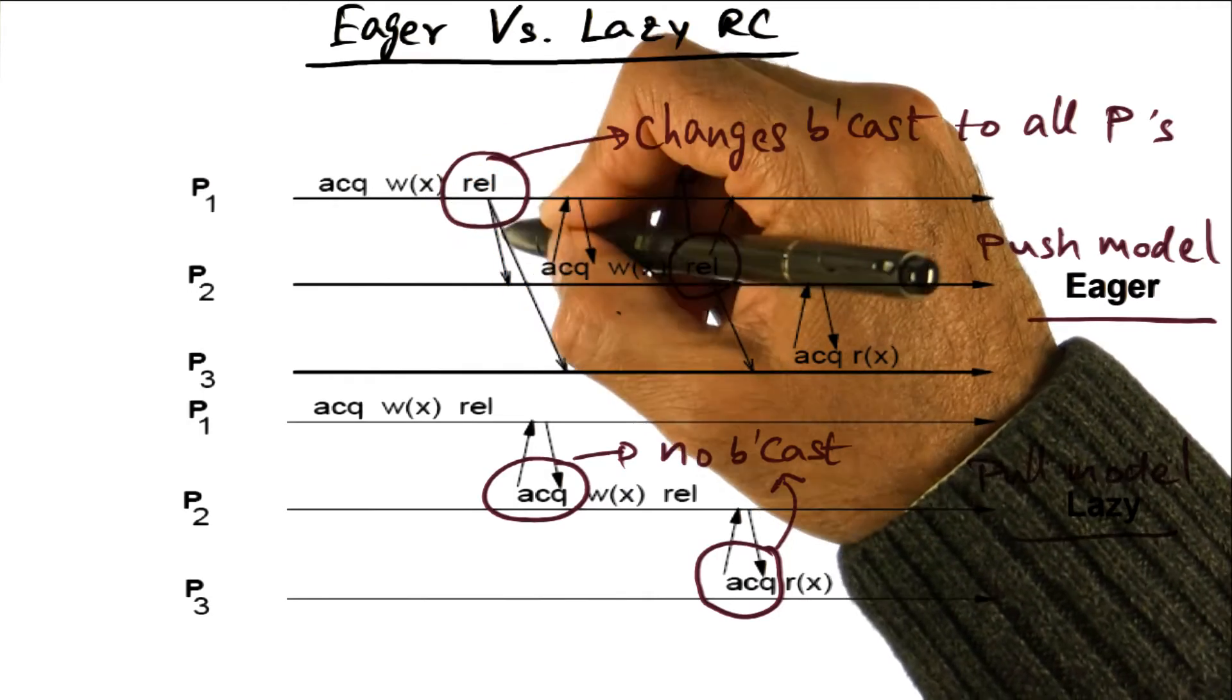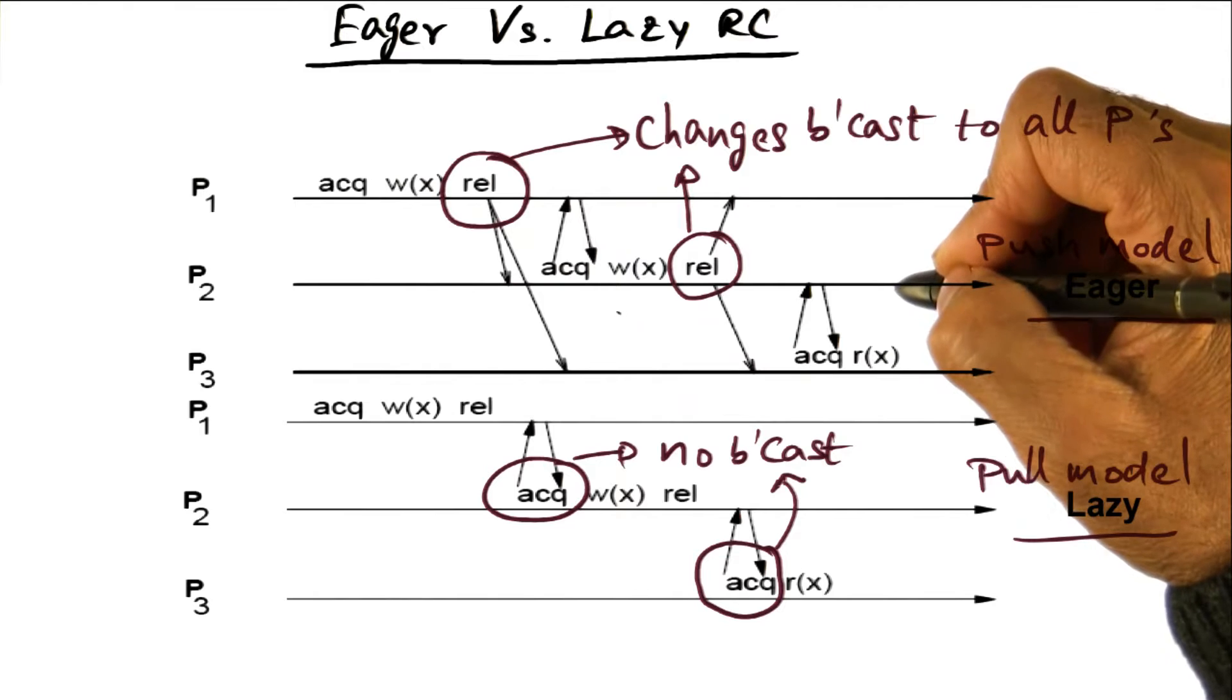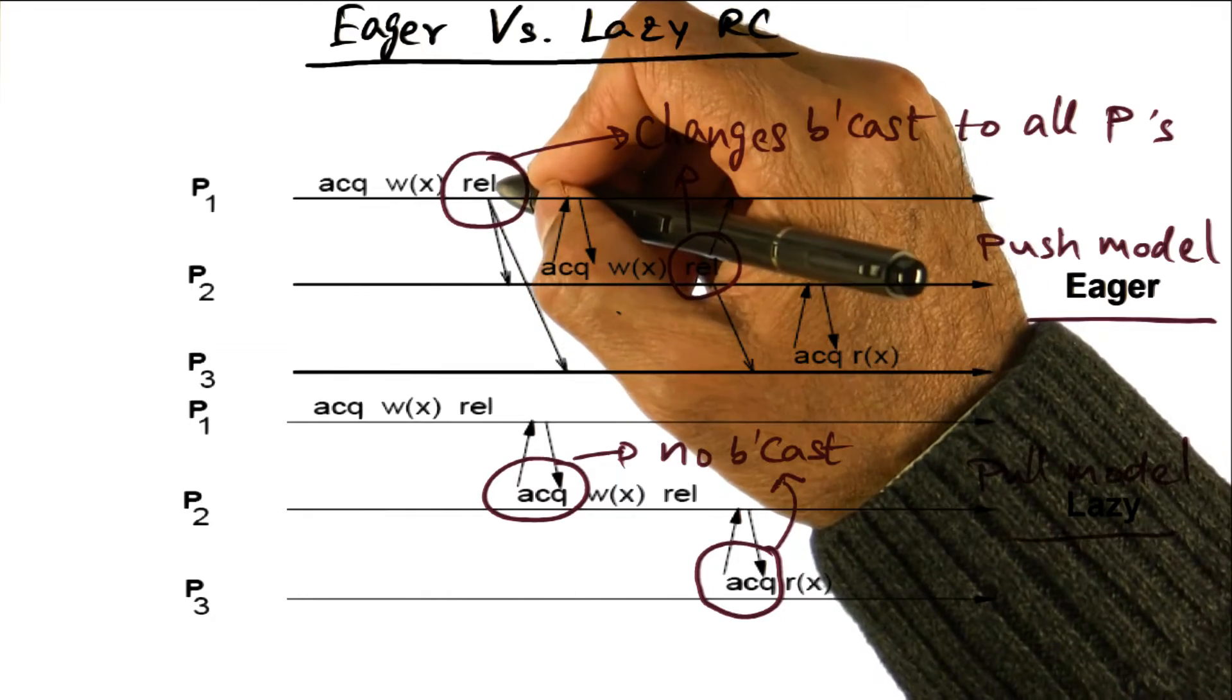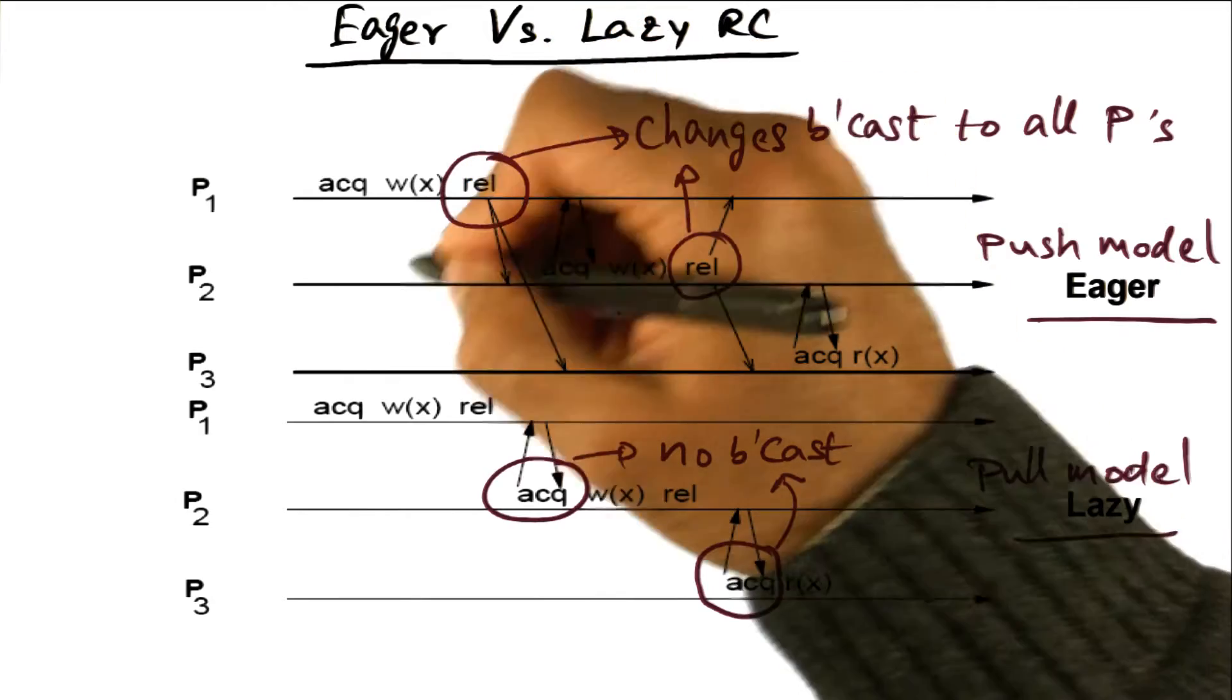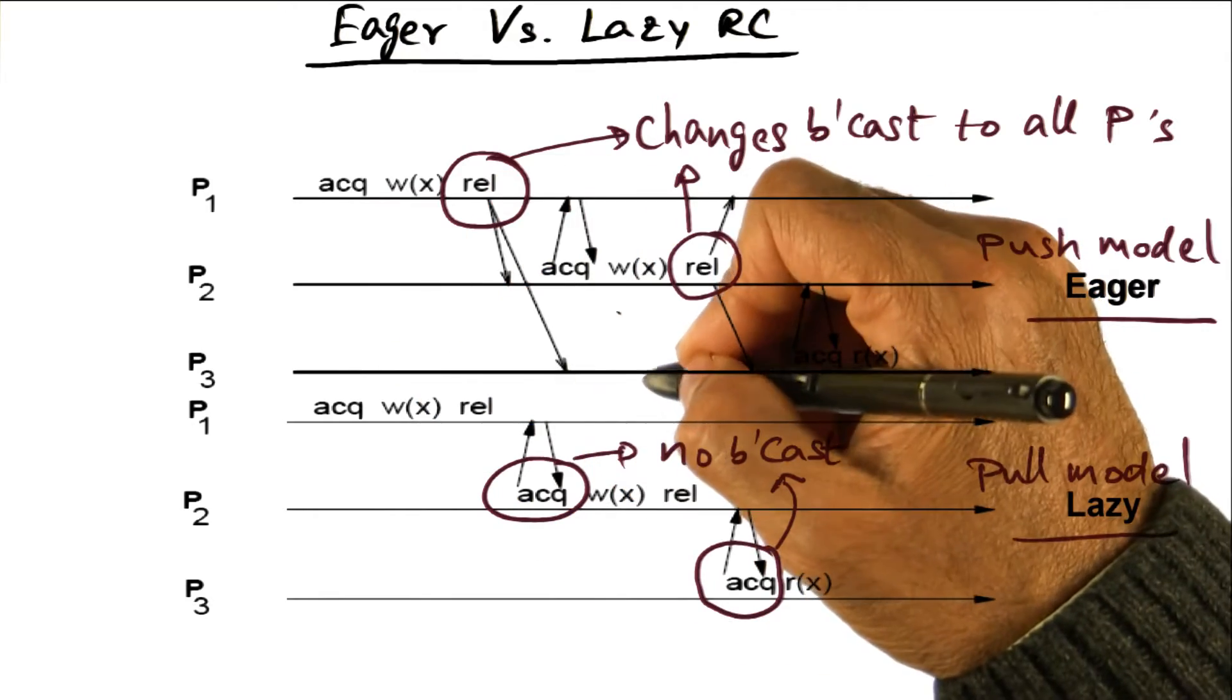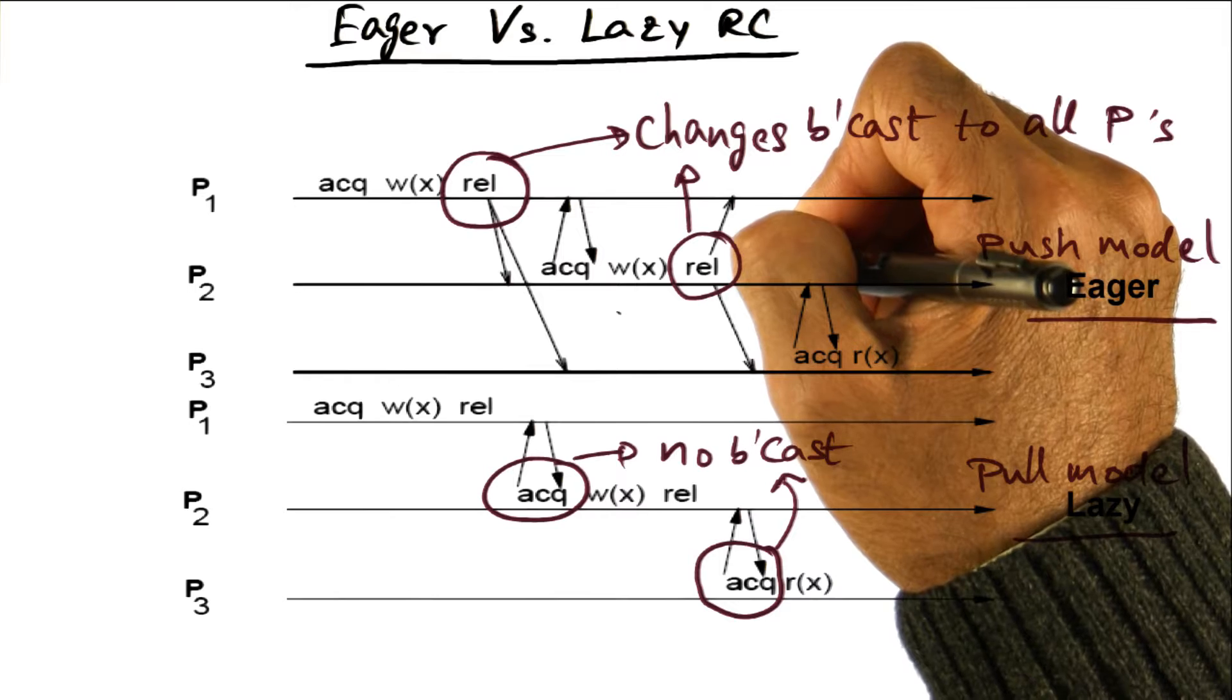Notice what is going on. P1 makes modifications, broadcasts it to everybody, but who really needs it? Well, only P2 needs it. But unfortunately, the RC memory model is eager. And it says, I'm going to tell everybody that has a copy of x that I have modified x. And so it's going to tell it to P2, it's going to tell it to P3 as well. P3 doesn't care because it's not using that variable yet, and P2 cares, and it of course is using that.